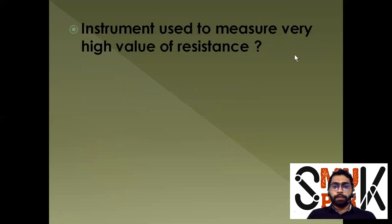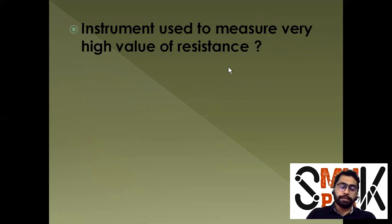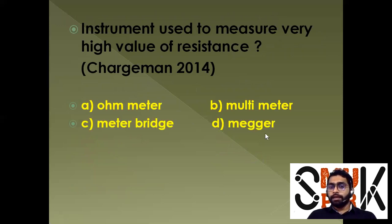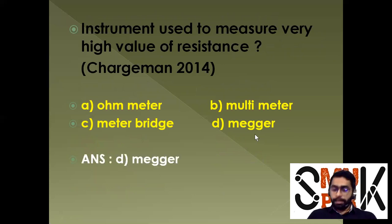The instrument used to measure a very high value of resistance — if asked about very high resistance, the answer is a Megger (also called a 1M ohm meter). For high resistance measurement, the answer is Megger.